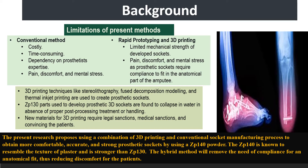Presently, 3D printing techniques like stereolithography, fused composition modeling, and thermal injection printing are used to create prosthetic sockets. ZP-130 parts used to develop prosthetic 3D sockets are found to collapse in water in the absence of proper post-processing treatment. Moreover, new materials for 3D printing require legal and medical sanctions as well as patient acceptance. The present research proposes using a combination of 3D printing and conventional socket manufacturing to obtain more comfortable, accurate, and strong prosthetic sockets using ZP-140 powder, which resembles the texture of plaster and is stronger than ZP-130. The hybrid method will remove the need for compliance for an anatomical fit, thus reducing discomfort for patients.